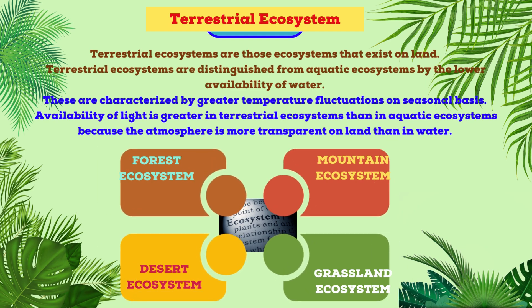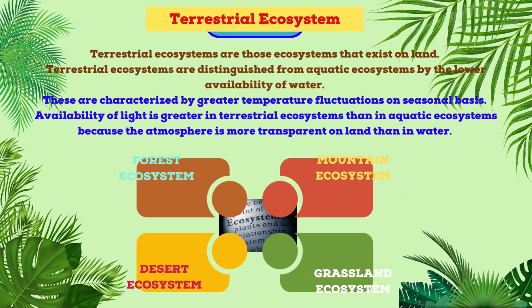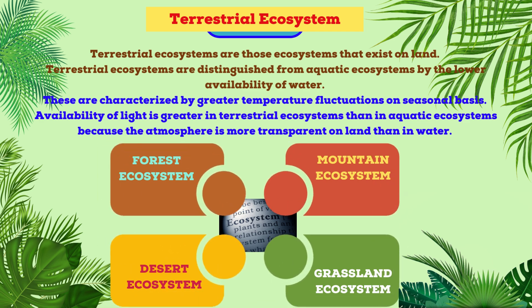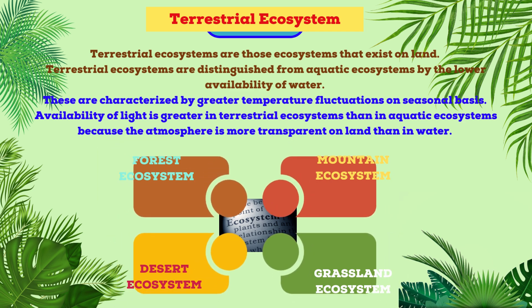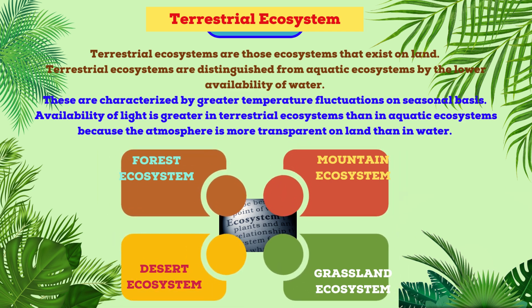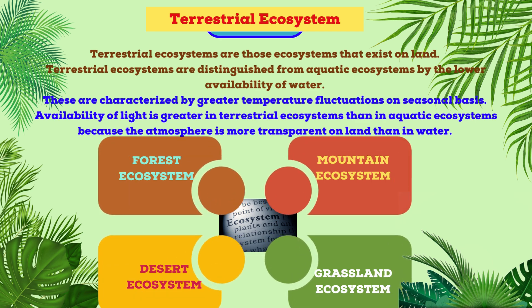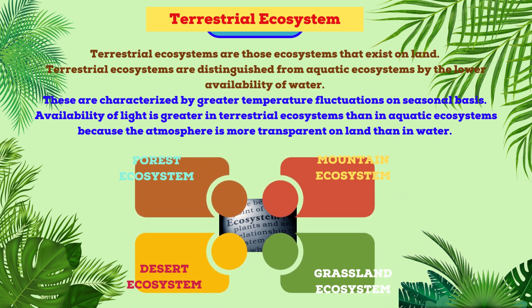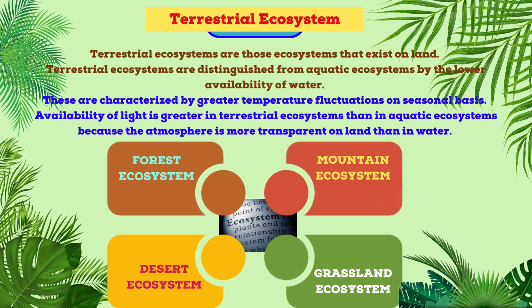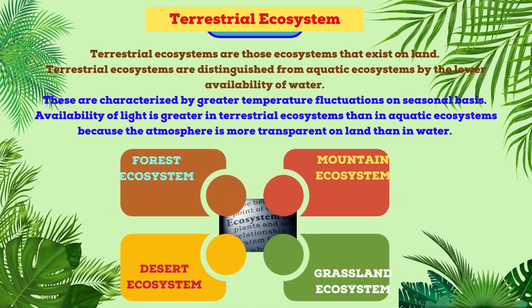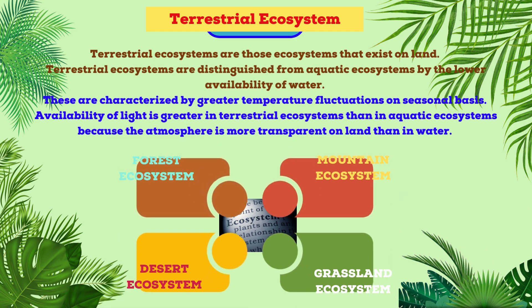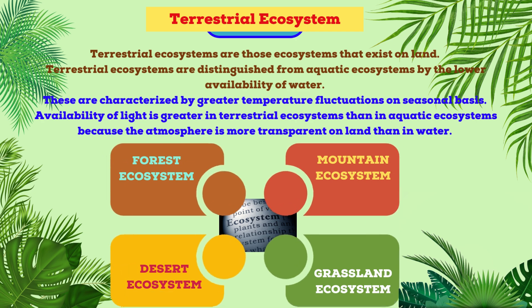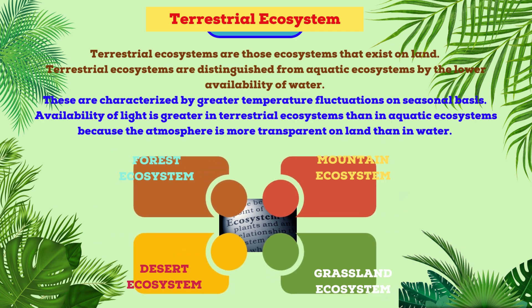Terrestrial ecosystems are those ecosystems that exist on land. They are distinguished from aquatic ecosystems by the lower availability of water and are categorized by greater temperature fluctuation on a seasonal basis. Availability of light is greater in terrestrial ecosystems because the atmosphere is more transparent on land than in water. Terrestrial ecosystems include forest, desert, mountain and grassland ecosystems.